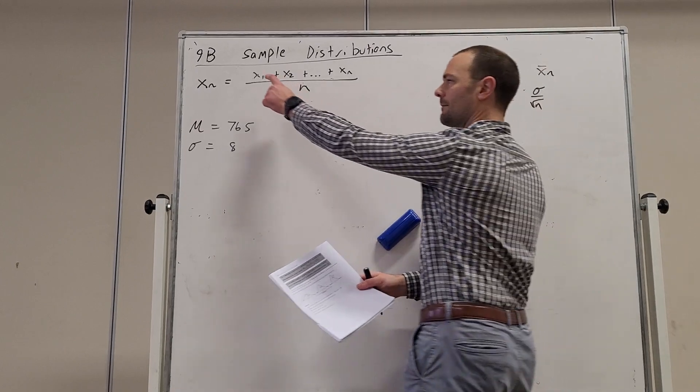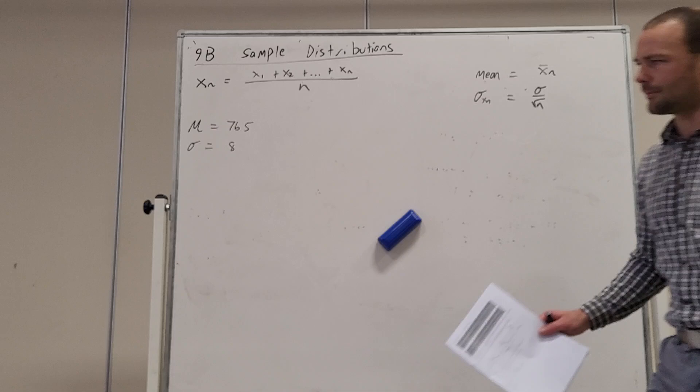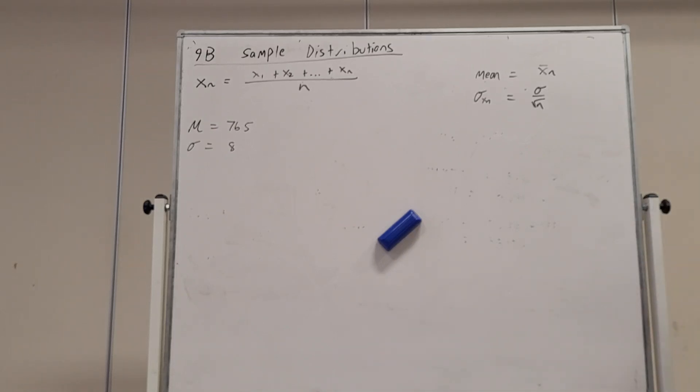So we've got one observation plus another observation, all the way up to n observations, divided by how many observations we're doing is going to be the Xn distribution.